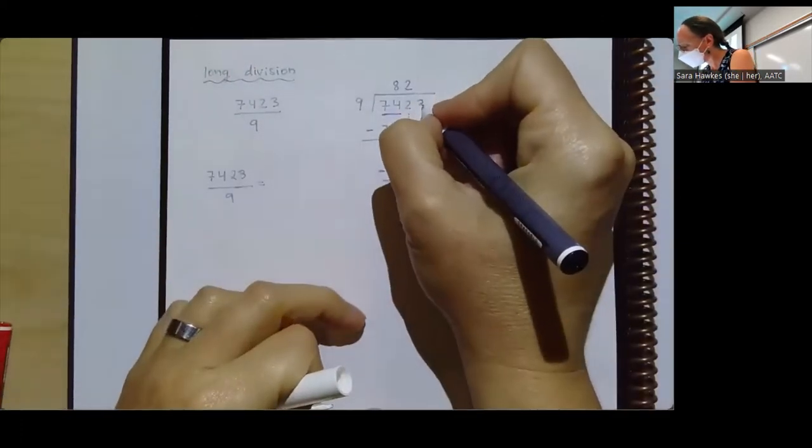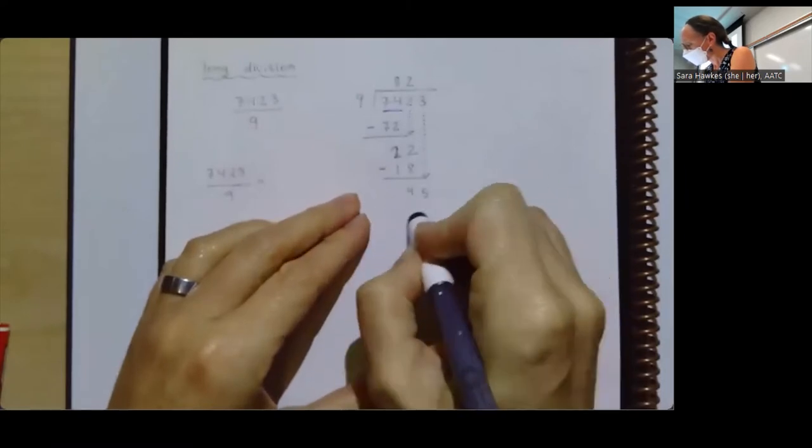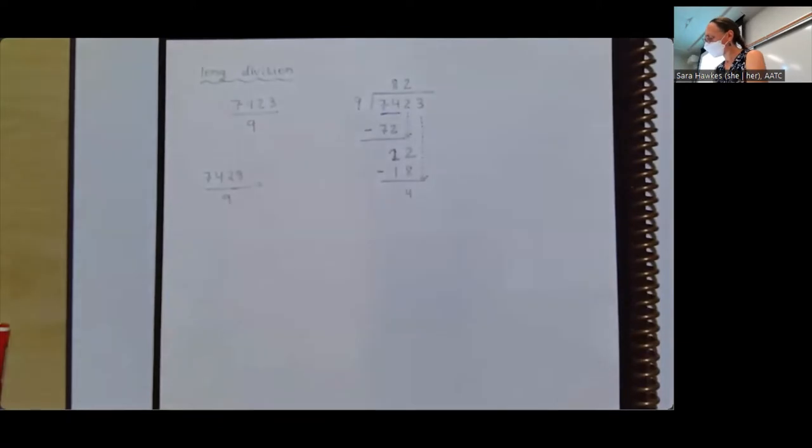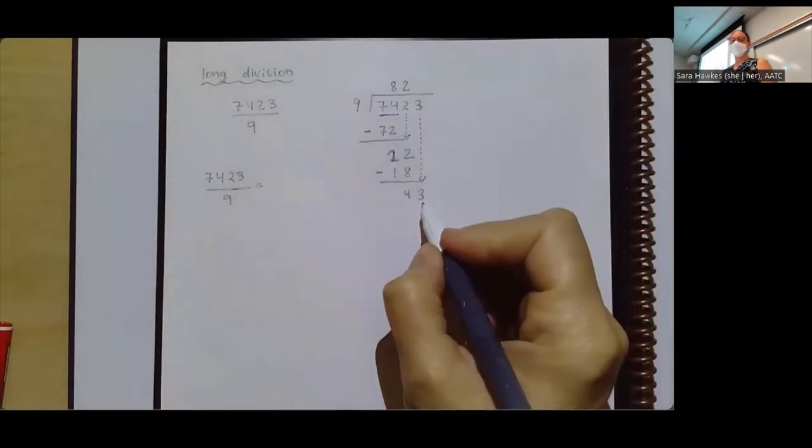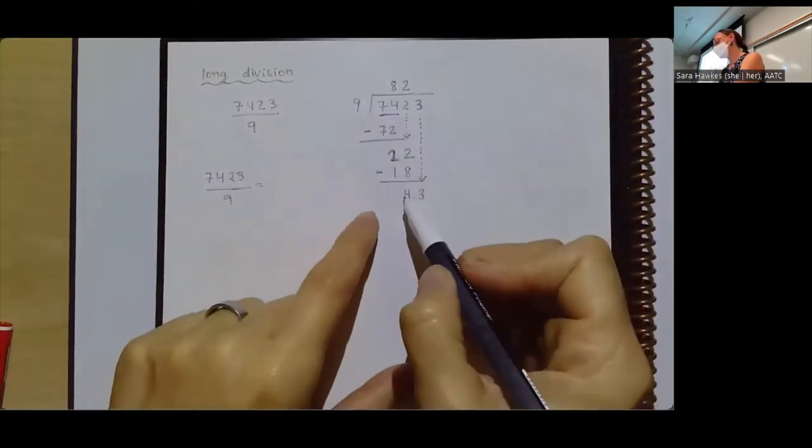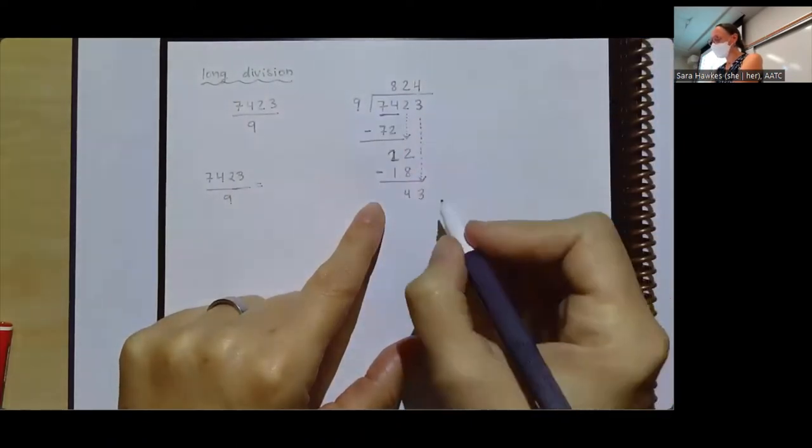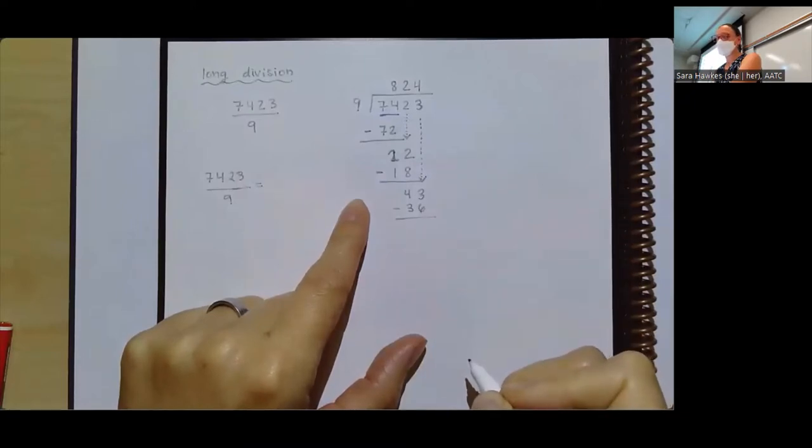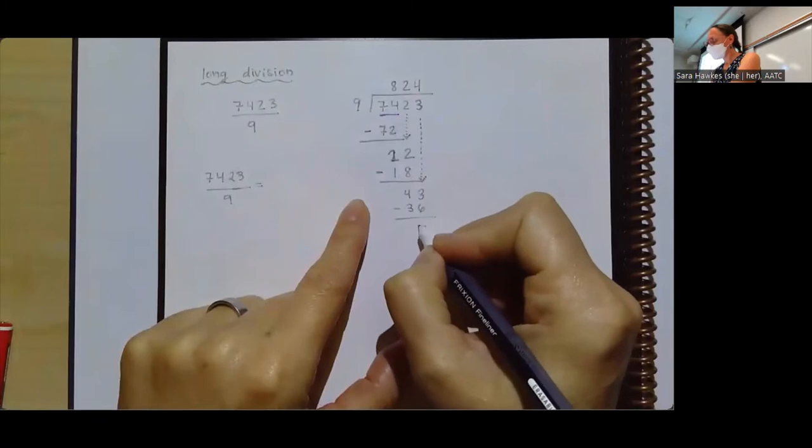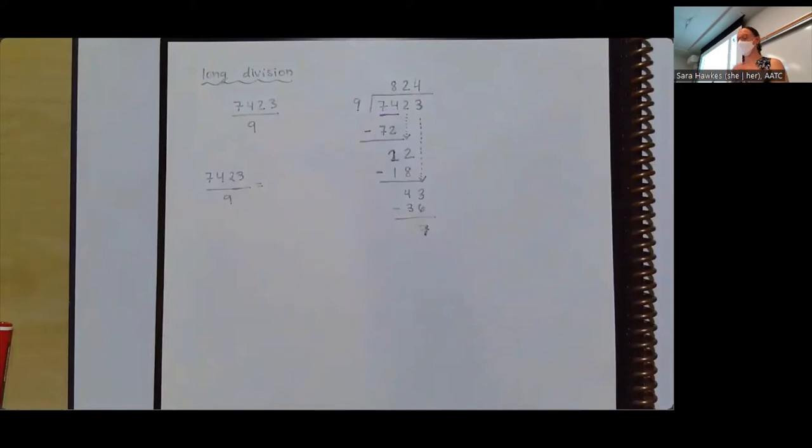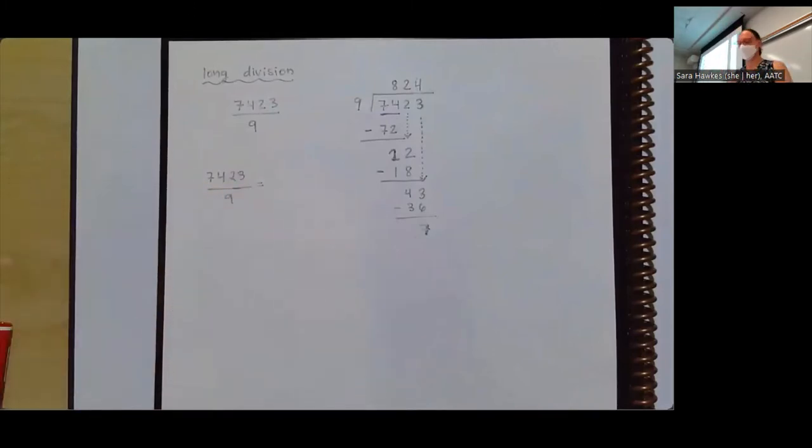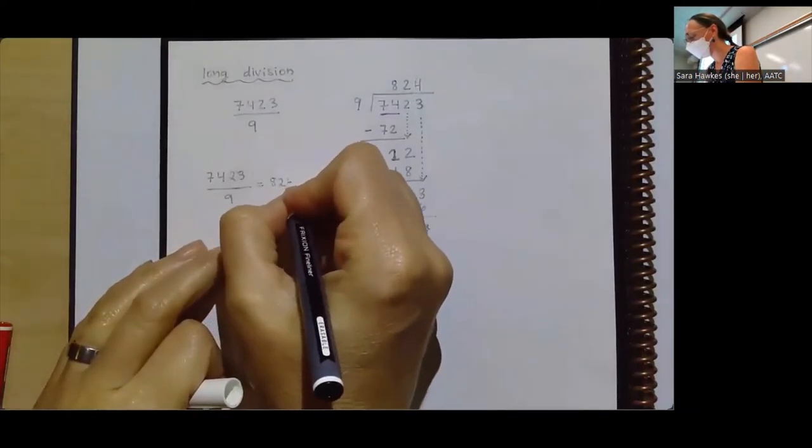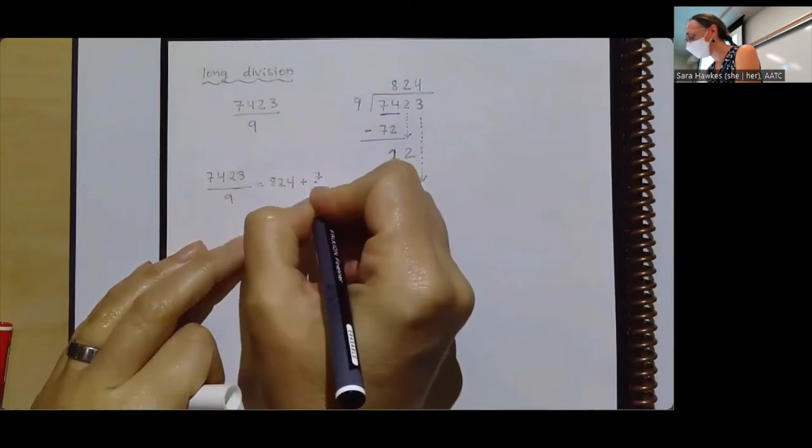Two or three, which is not going to change anything except that last step. Okay, good thing I told everybody to not take notes. You didn't even have to fix anything on your paper. Now that that's a three, nine times what gets me close to 43, but without going over? And nine times four, 36. Now, this actually works out better for me. What that means is that 7,423, thank you, divided by nine is equal to 824 plus seven ninths.